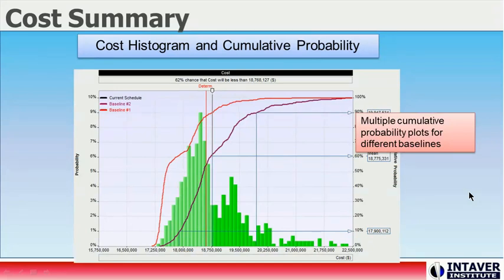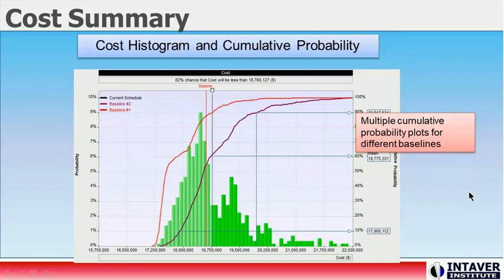After running a Monte Carlo simulation, two of the most popular reports are histograms and cumulative probability. In this particular example, we have a combined histogram and cumulative probability chart. On the left y-axis is the probability — we can see the most likely value occurs 9% of the time. On the right y-axis is the cumulative probability values, with markers placed at the 10th percentile, mean, and 90th percentile.